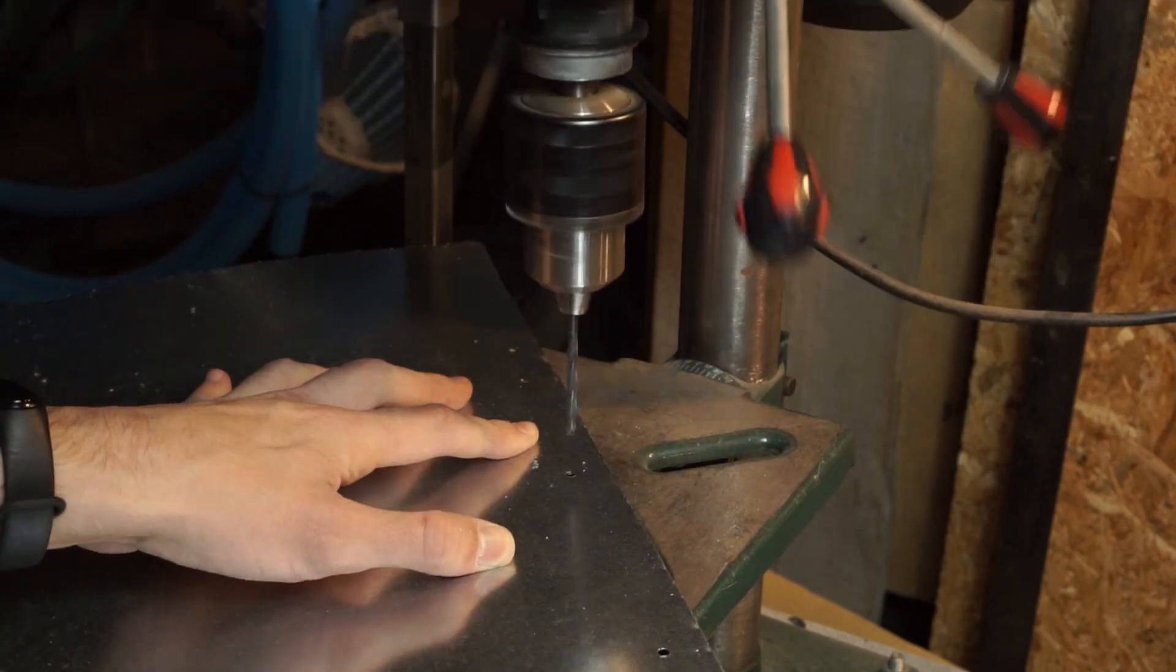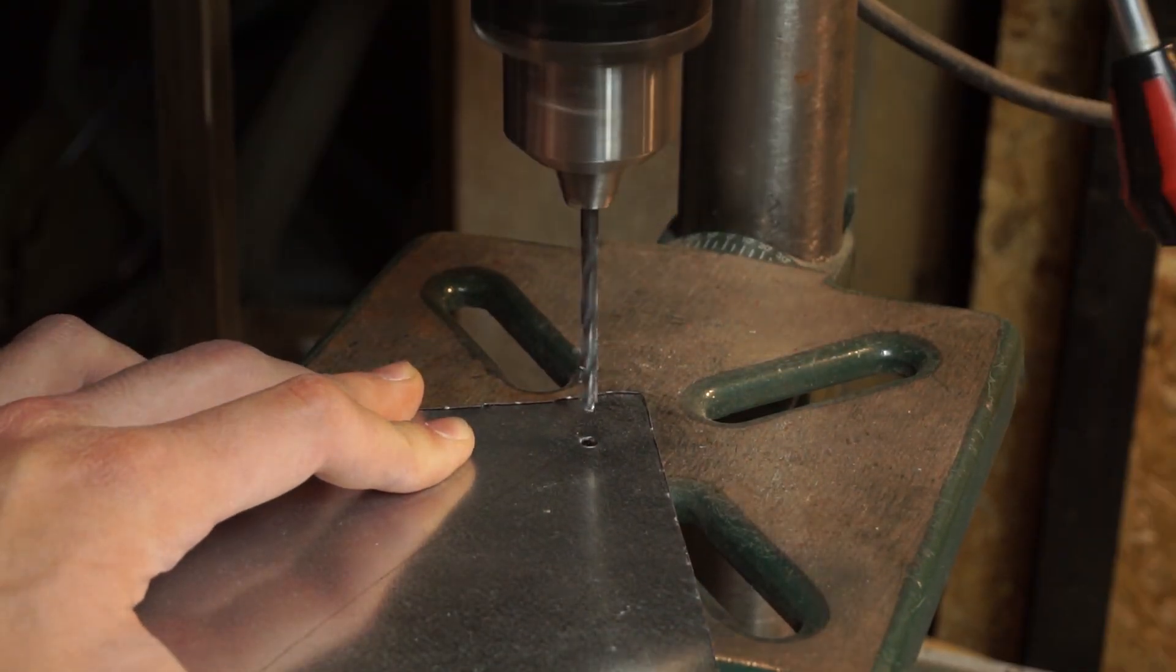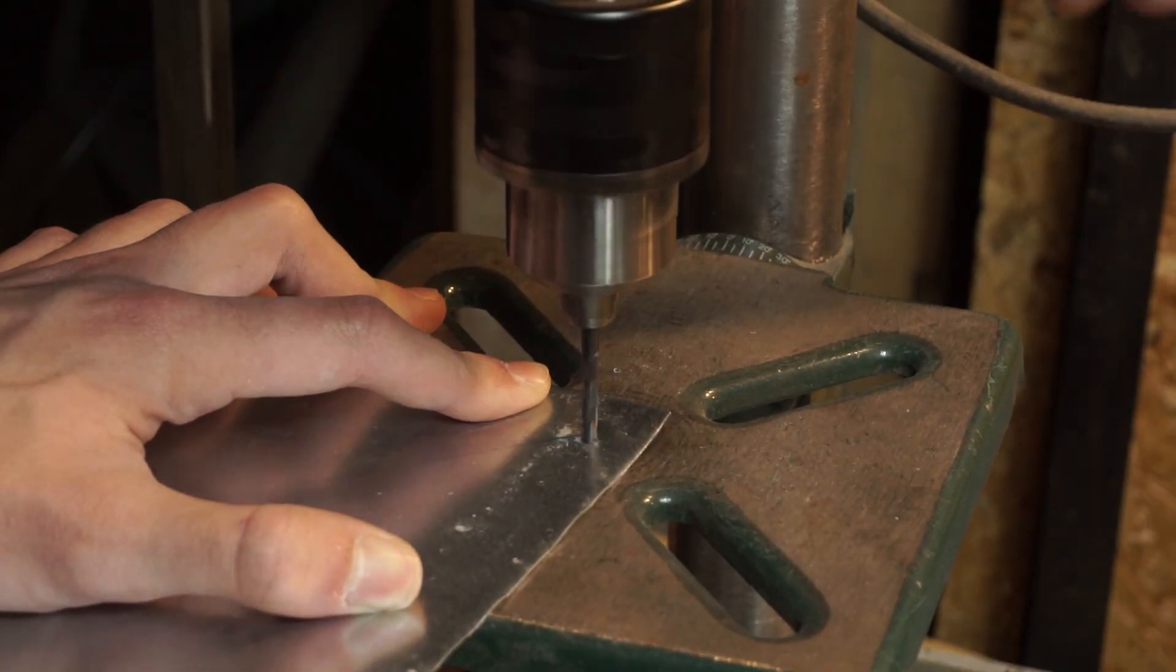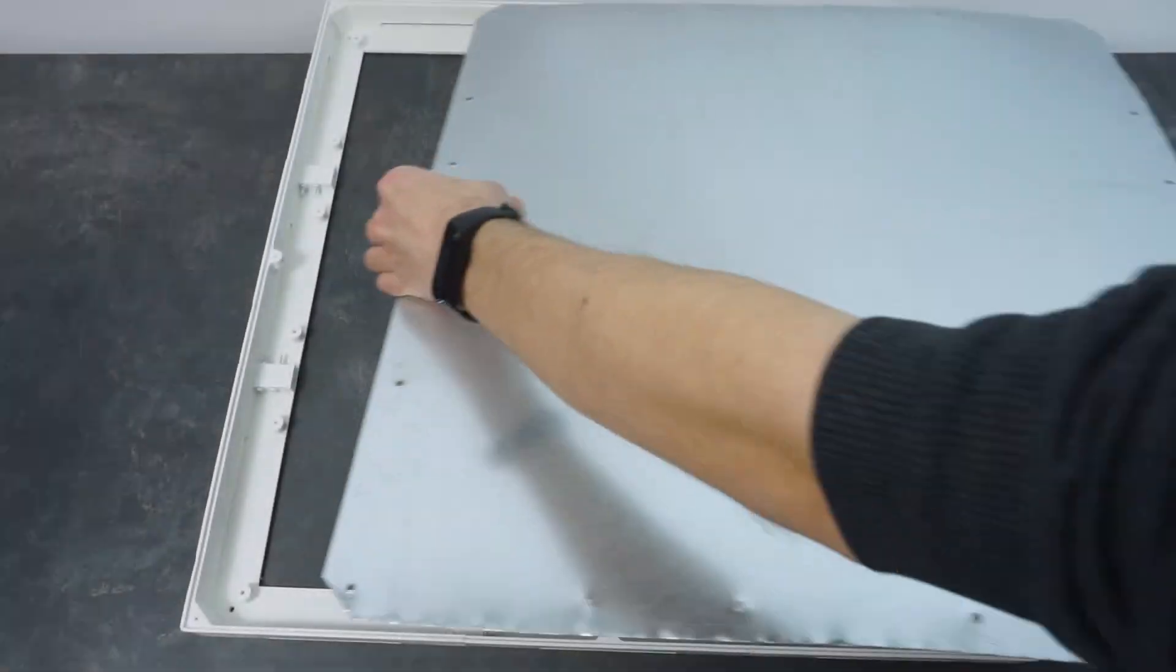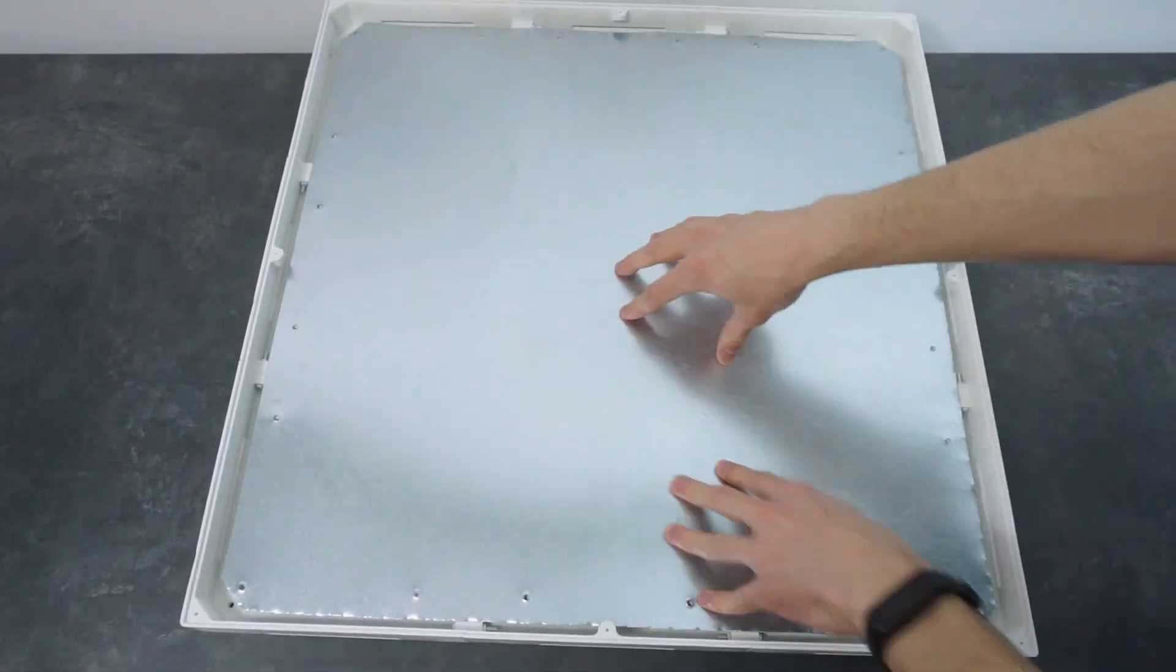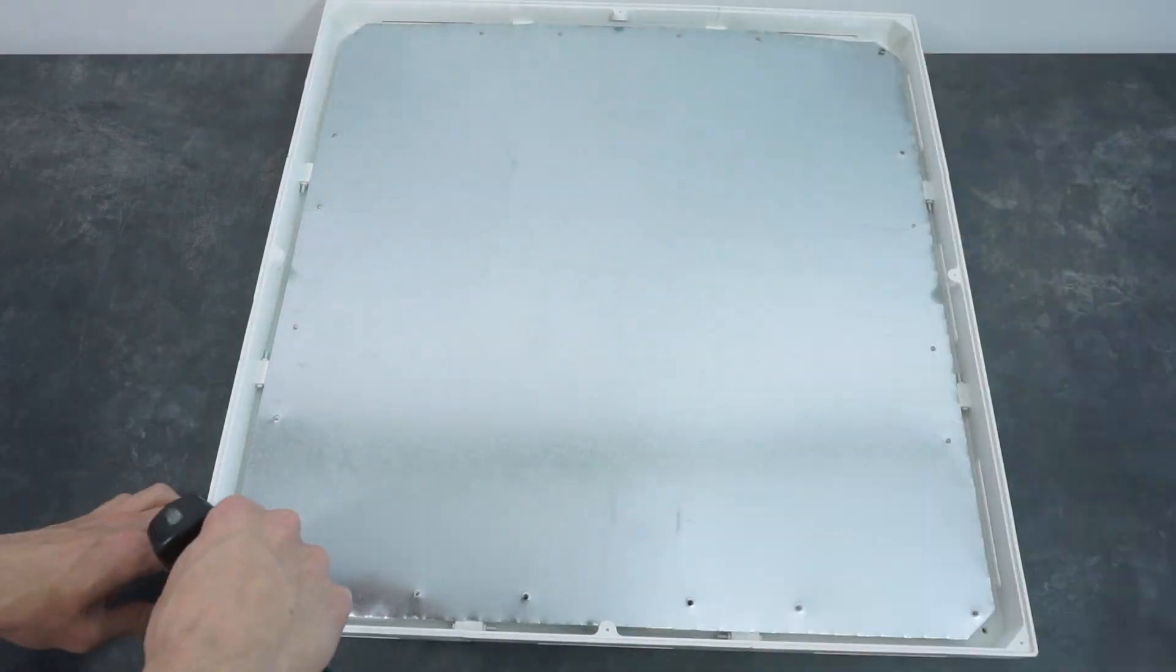Later I used some white spray paint to give it a nice finished look. For this panel I had to find a much bigger steel sheet in which I also drilled mounting holes.